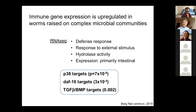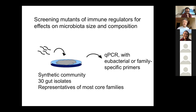We wanted to test those candidates and see how they might affect microbiome composition. Instead of using complex microcosms, we used a synthetic community of 30 gut isolates — bacteria that can colonize the worm gut — representative of most core families. Using identified bacteria allowed us to interrogate gut microbiome composition by quantitative PCR, with universal eubacterial primers to quantify absolute bacterial load in worms, plus family-specific primers for Enterobacteriaceae, Pseudomonadaceae, and Bacillaceae.